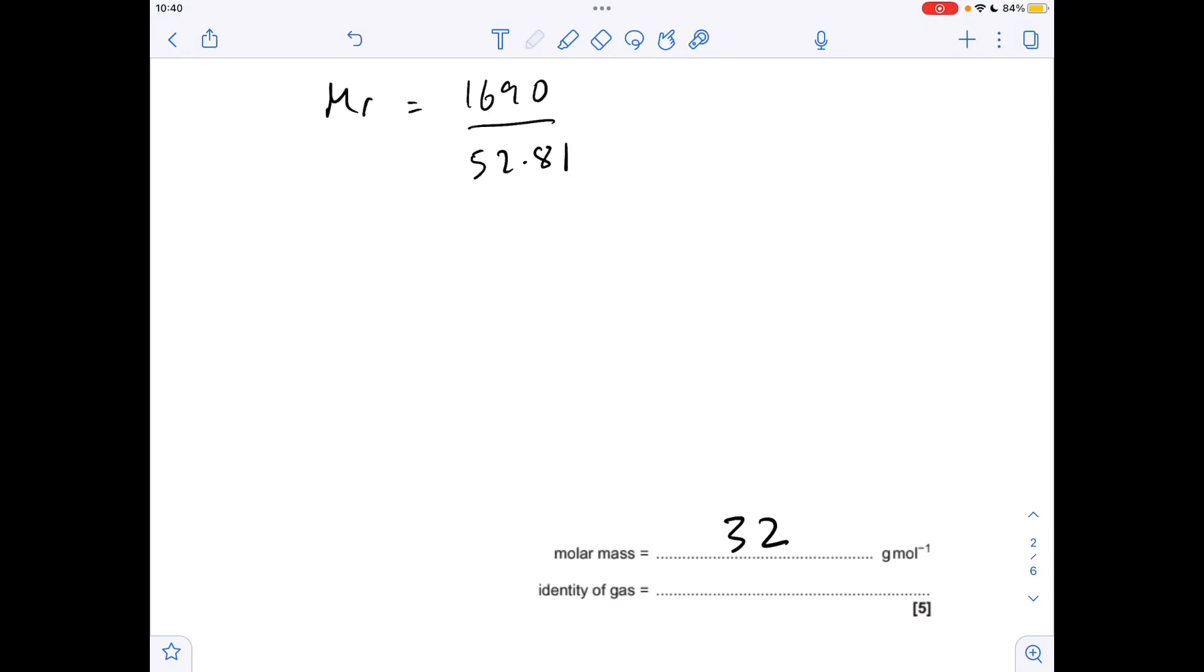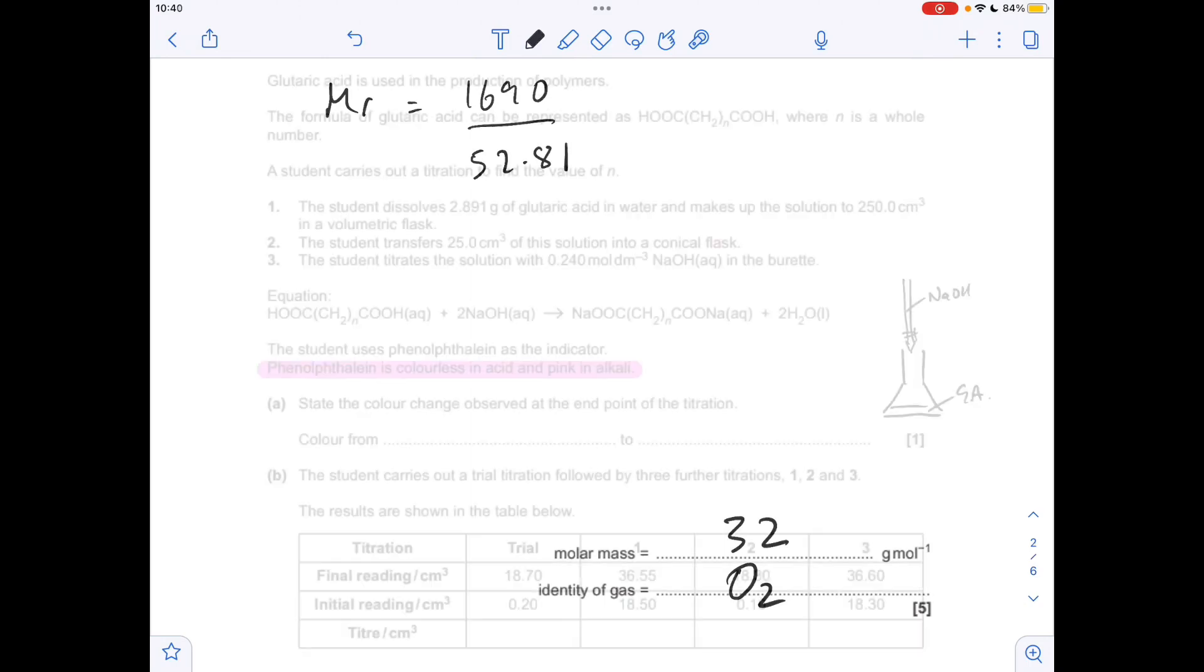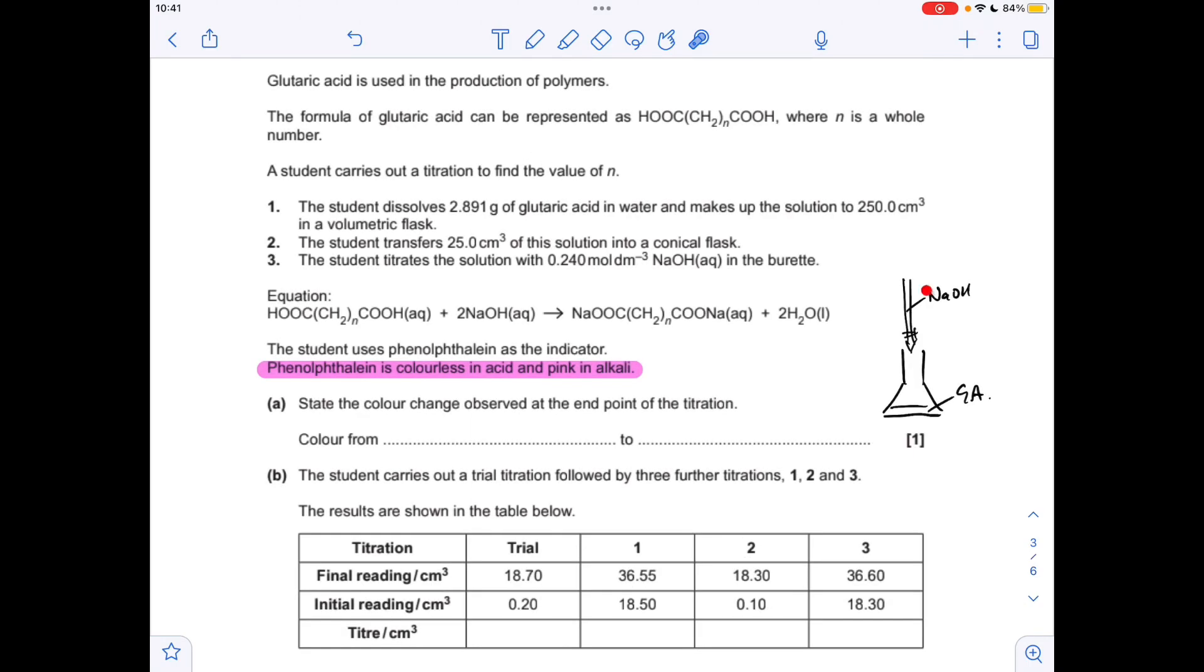Moving on to the titration calculation. You'll notice I've got a little picture here of the conical flask and the burette just to get this color change right. The acid is in the conical flask to start with, so phenolphthalein is colorless in acid, so it's going to start out as colorless. As the alkali is added you're going to get those flashes of pink that you get during your titration, but obviously if the acid is still there it'll go back to colorless. When that magic drop lands in there and there's no acid left, it'll go pink. So the endpoint color change is obviously colorless to pink.